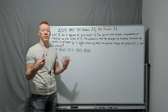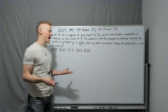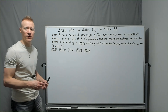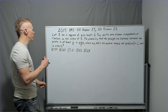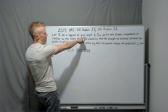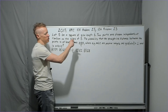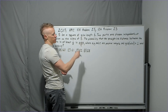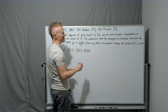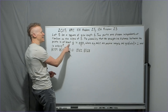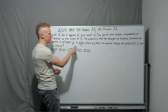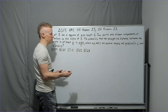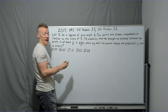I did notice that Richard Rusick also filmed a solution to this, so you might want to watch his — I'm sure he'll explain it quite well. But it's a fun problem, so I'm going to go over it anyway. Let S be a square of side length one. Two points are chosen independently at random on the sides of S. The probability that the straight-line distance between the points is at least one half. There's a pi symbol in the answer, so circles will probably be involved at some point.